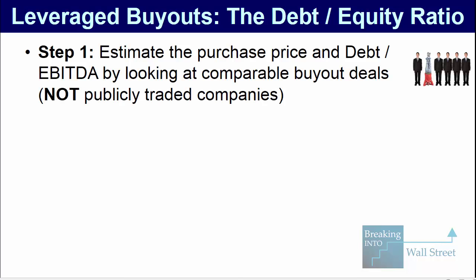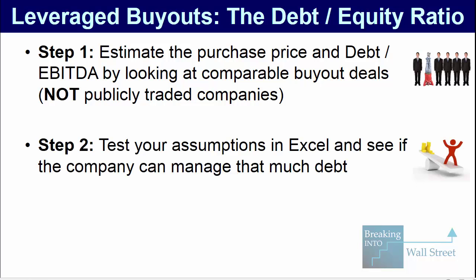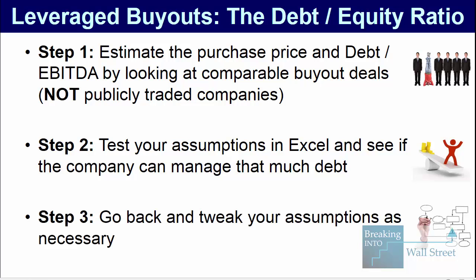Step one is that you have to estimate the purchase price multiple and debt-to-EBITDA ratio by looking at comparable leveraged buyout deals. You don't want to look at comparable public companies because they're almost always going to have less debt than what private equity firms could use to acquire companies in leveraged buyouts. Then, once you have the rough numbers, you can test your assumptions in Excel and see if the company can actually manage that much debt. If the credit stats and ratios do not move in the direction you want, you might have to decrease the amount of debt. If they do move in the direction you want, even in more pessimistic cases, maybe you can increase the amount of debt. And then in step three, you go back and tweak your assumptions as necessary to come up with something that is more realistic for this type of deal.